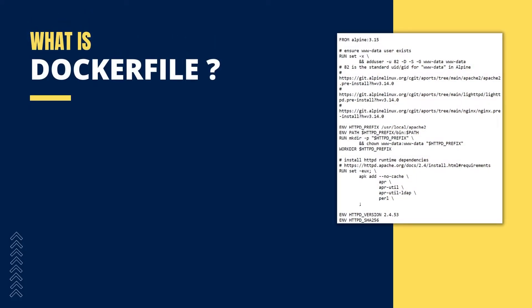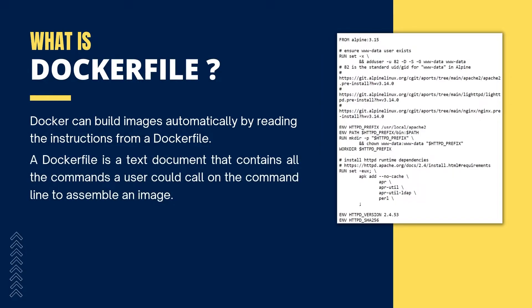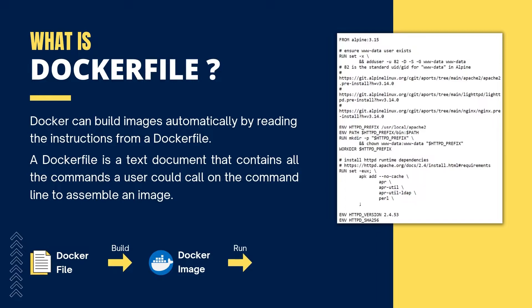First let's see about Dockerfile. What is a Dockerfile? Docker can build images automatically by reading the instructions from a Dockerfile. A Dockerfile is a text document that contains all the commands a user could call on the command line to assemble an image. So we can create a Dockerfile and use the docker build command to create an image, then use docker run command to create and run a container from that image.